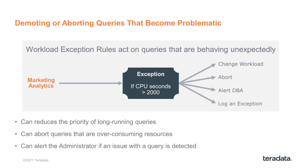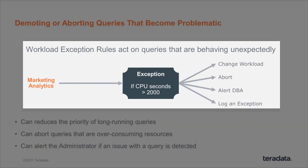For a workload exception rule, you have to set a threshold and decide which queries in the workload qualify based on that threshold. In this case, our threshold is that the query in this workload has consumed over 2,000 CPU seconds. Then you have to define an action — the most common action is just to change the workload, moving it to a lower priority workload.